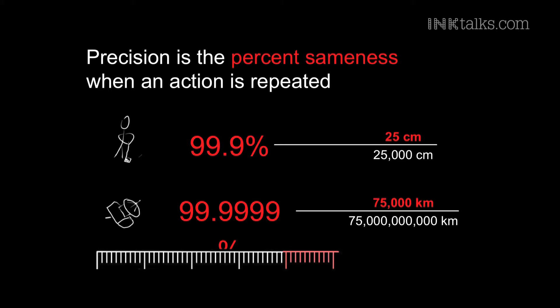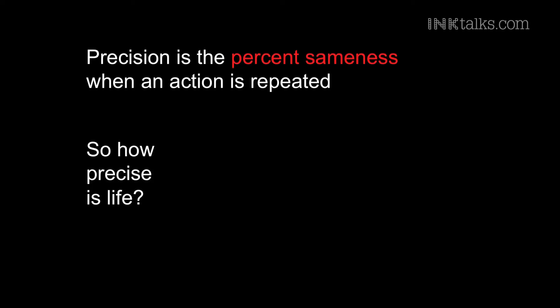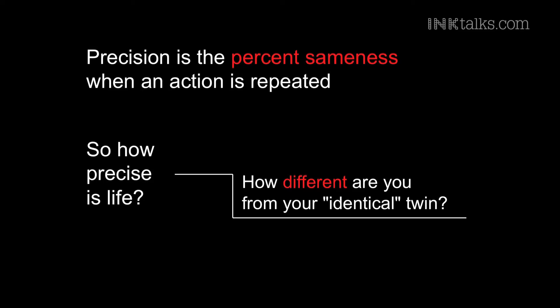Now that I've told you how to quantify precision — how to measure it and put a number to it — I'll get back to my original question: how precise is life? Now that we know the protocol, it's actually very easy. To check how precise life is, you repeat the same action twice and see how different it is. In biology, such things do happen. The real question you should be asking is: how different are you from your identical twin?